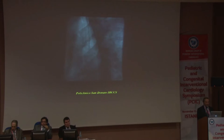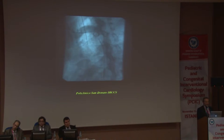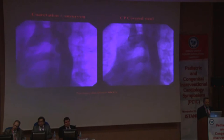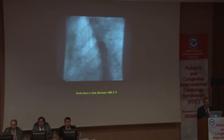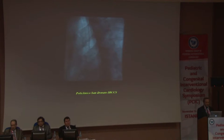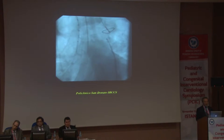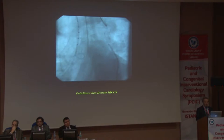This is a blind-ending site of coarctation with no passage at all. By doing a simultaneous injection from above and below, we demonstrated a fibrous continuity at the interruption site. We perforated it with a radiofrequency wire from above, establishing a circuit and allowing a small catheter to pass through the coarctation.